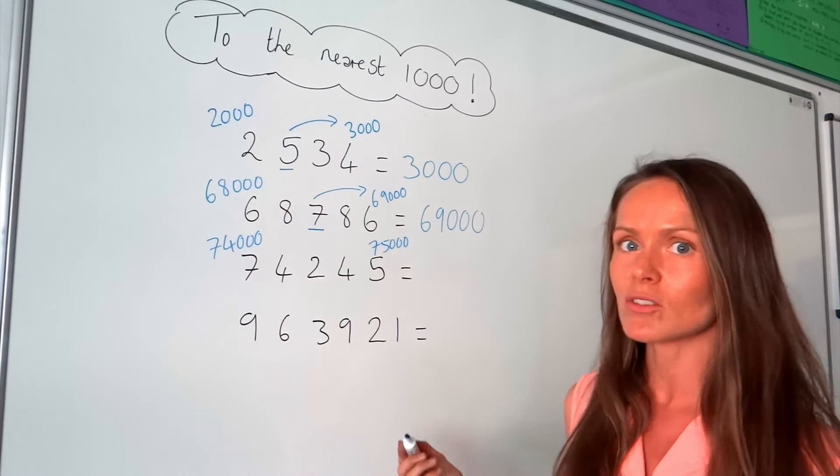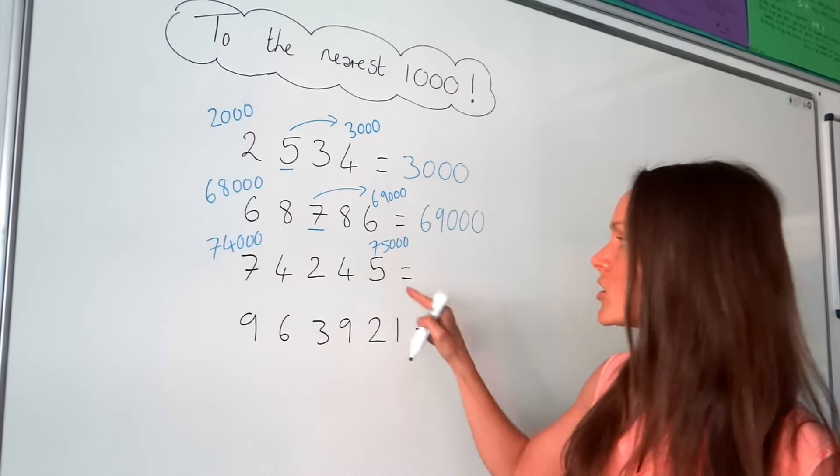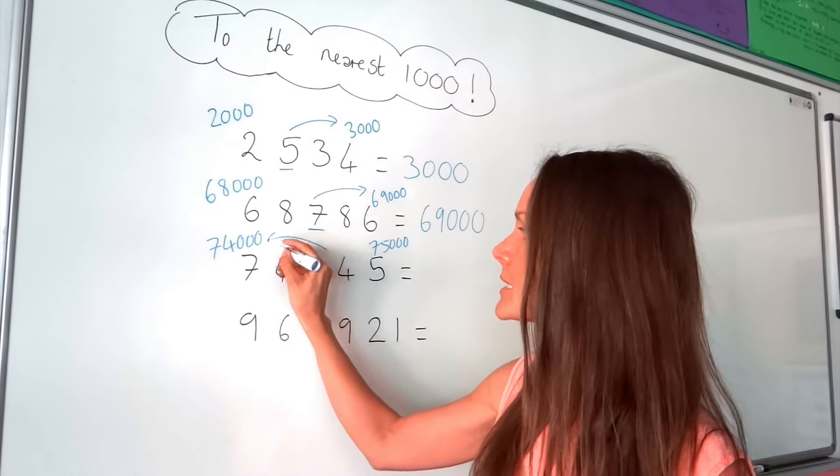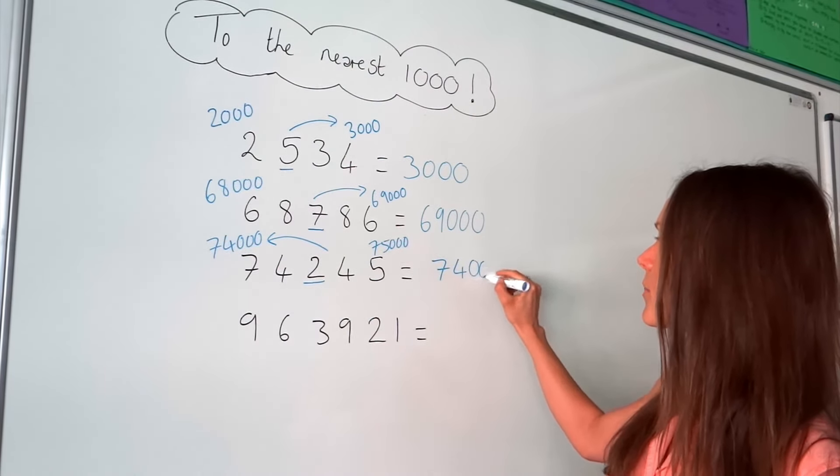So you might be able to spot straight away which one this number's closest to. But if you can't, check that third digit there, the third one from the end. And this time, it's smaller than 5, which means we have to round down in this question. So this one is 74,000.